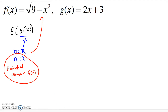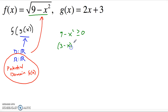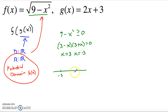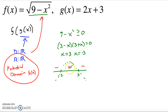Let's think about when 9 minus x squared is greater than or equal to zero. This factors into (3 minus x)(3 plus x), giving roots at x equals 3 and x equals negative 3. Since it's a negative x squared, the parabola opens downward. Sketching it: it's negative outside the roots and positive between them. So 9 minus x squared is greater than or equal to zero only on the interval from negative 3 to positive 3.